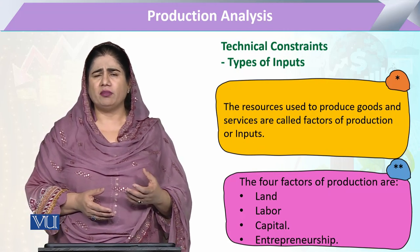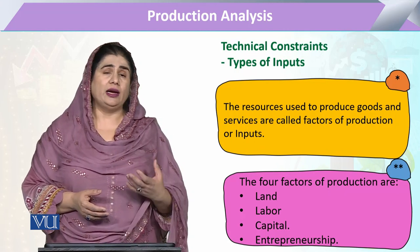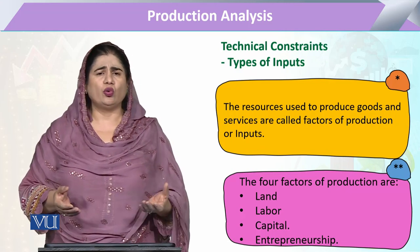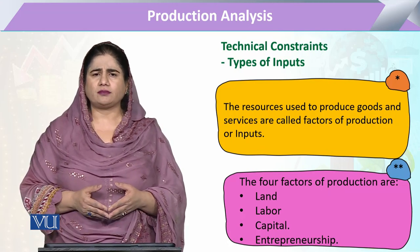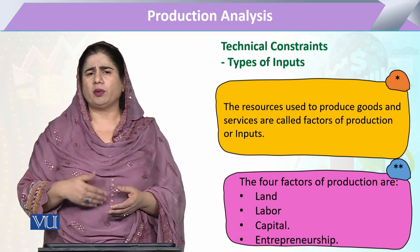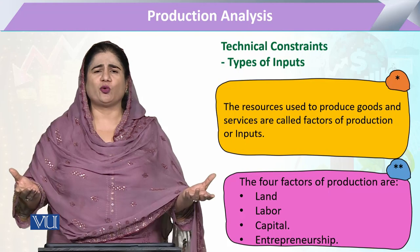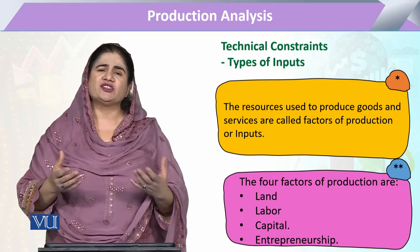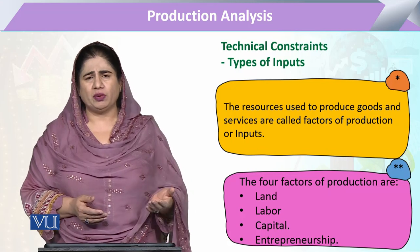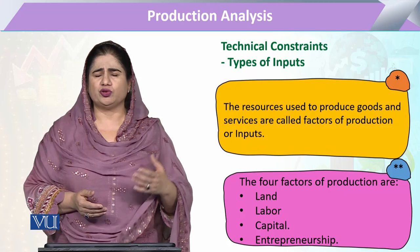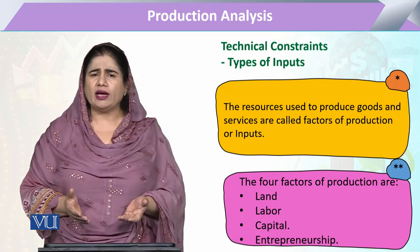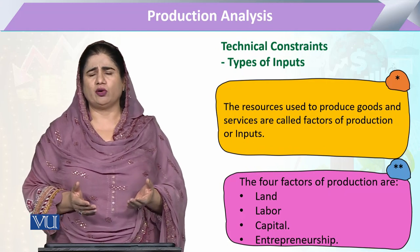The second major factor of production is labor, which means the population — the people of that country. But out of that population, not all people will be in working condition. There will be a certain number that includes small infants, children, school-going people who are not going to contribute to production, as well as certain disabled and old-age people. So in short, we cannot take all the population as labor.